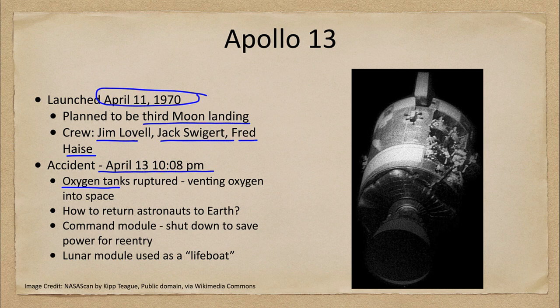We can see a picture of some of that damage here. You can see the damaged craft on the left-hand side — this contained the command module section. This was looking back at the piece of equipment that had been damaged in the accident days before. You can see that a big part of it is torn away.